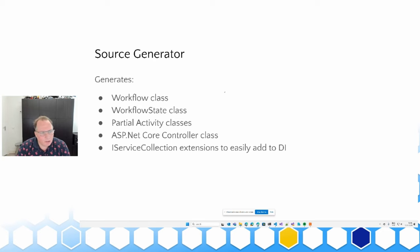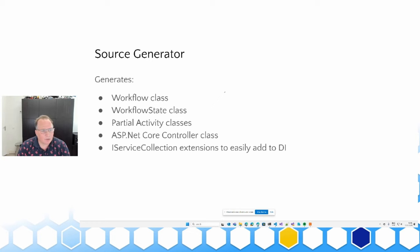In a nutshell, the source generator is a C# source generator. It will generate the workflow class, the workflow state class — which holds all the input state, output state, and in-between states used for decisions. It will generate the partial activity classes you can later use to implement functionality, the ASP.NET Core controller class, and some utility classes to easily add your workflow to the .NET dependency injection framework.